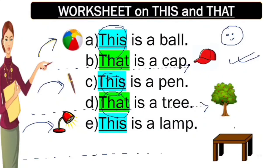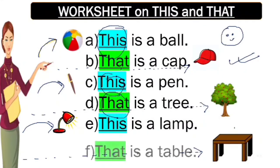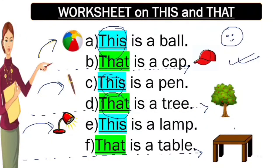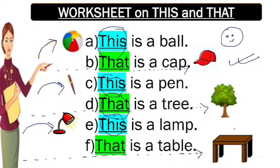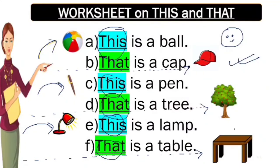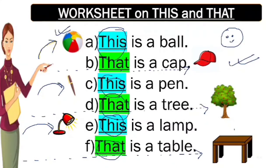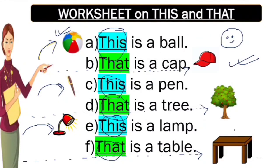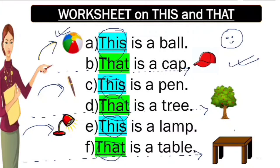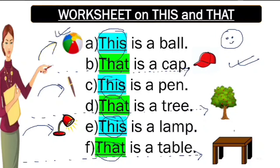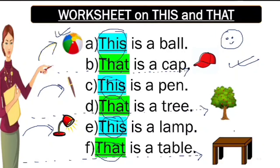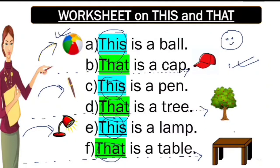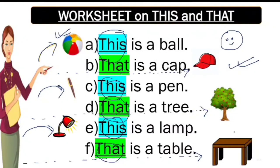Table is far away from Miss Rosie, so it will be: T-H-A-T, that is a table. Let's review — this is a ball, that is a cap, this is a pen, that is a tree, this is a lamp, that is a table. Clear?